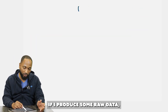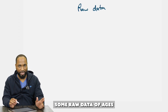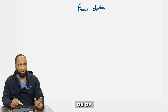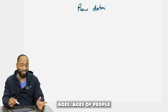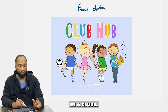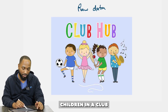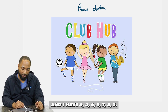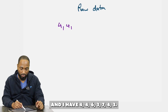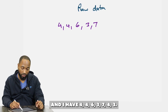Let's use some raw data — the ages of children in a club: 4, 4, 6, 3, 7, 4, 3. Now, what is the mode?